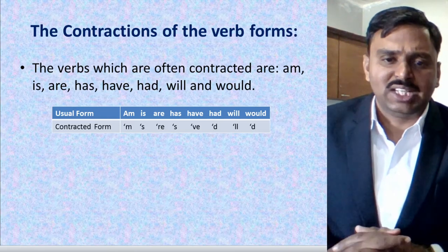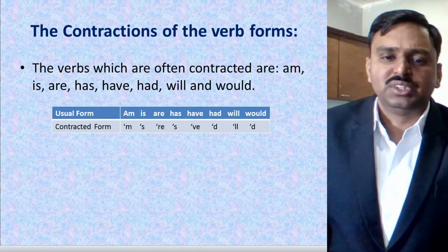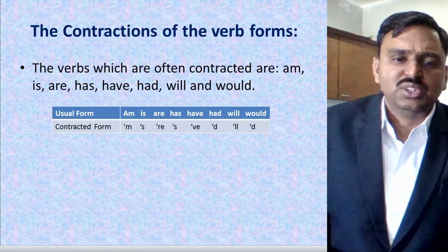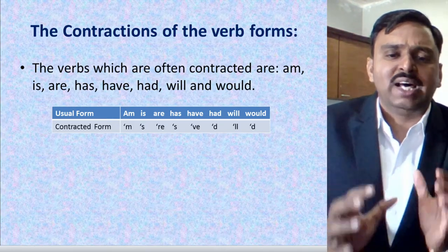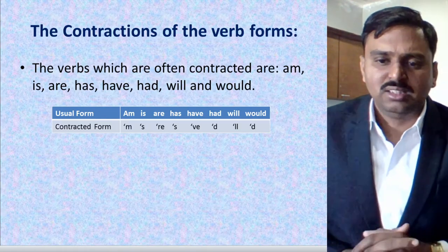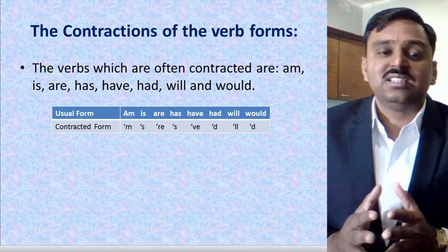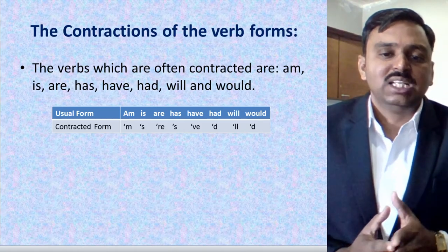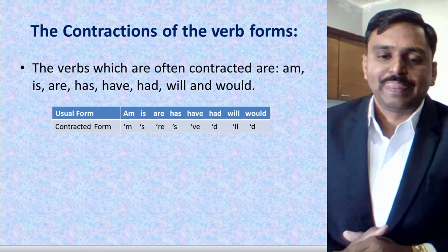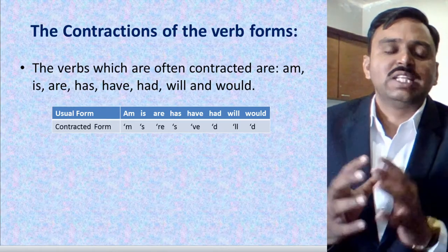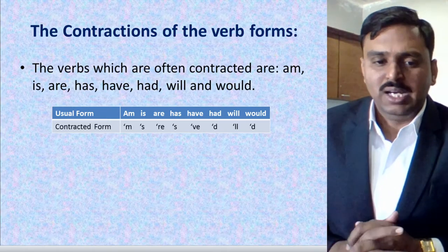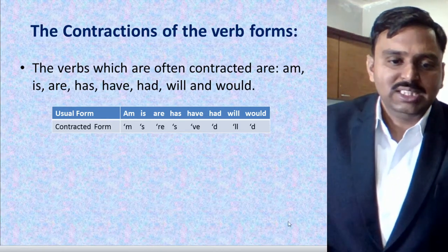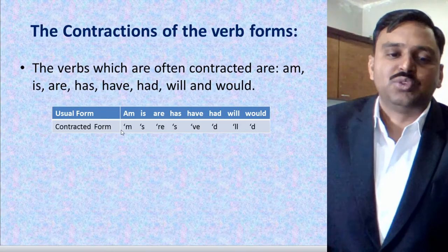There are some verb forms of contraction. Most of the time we use contractions with major auxiliary or helping verbs. The verbs which are often contracted include: am, is, are, has, have, had, will, and would. You can see the usual form in one column and the contracted form alongside.